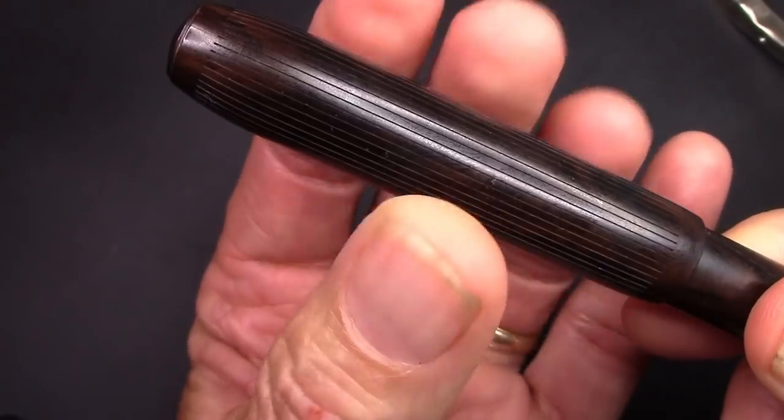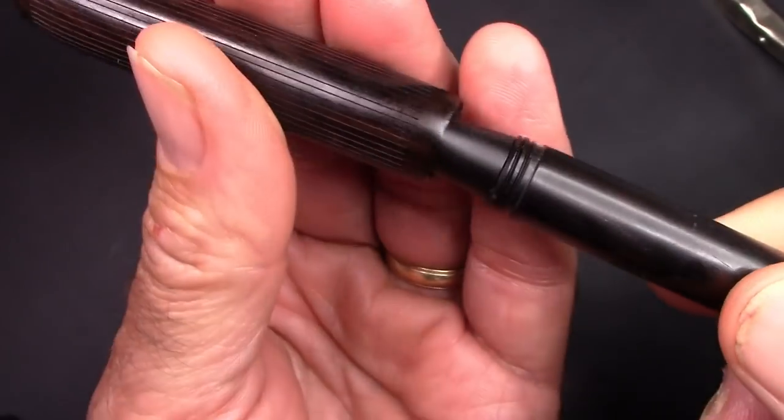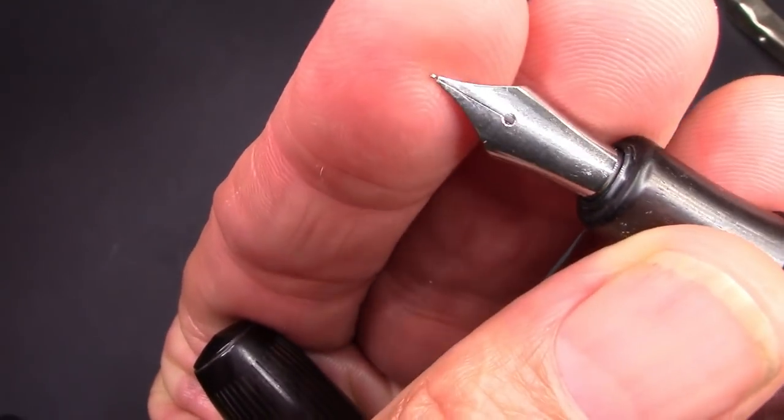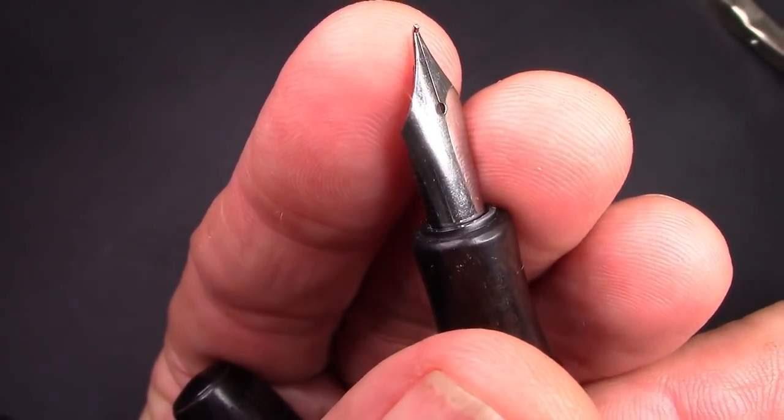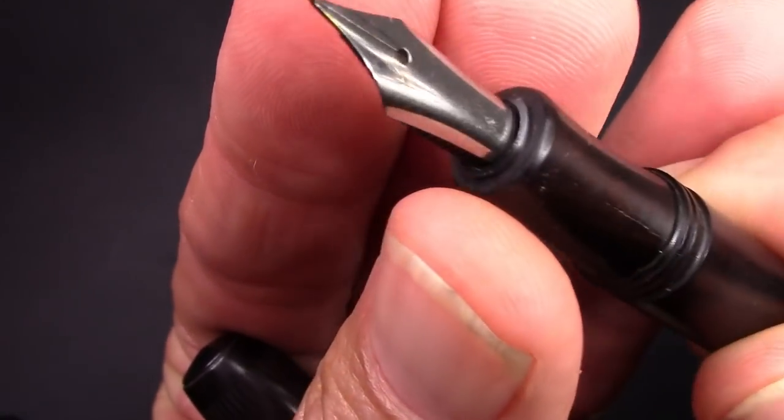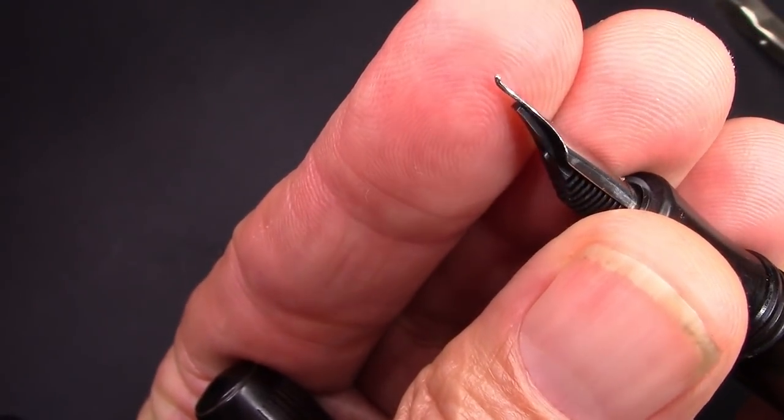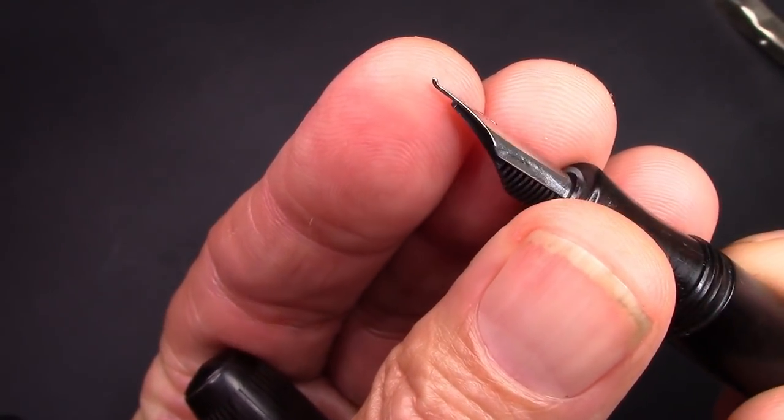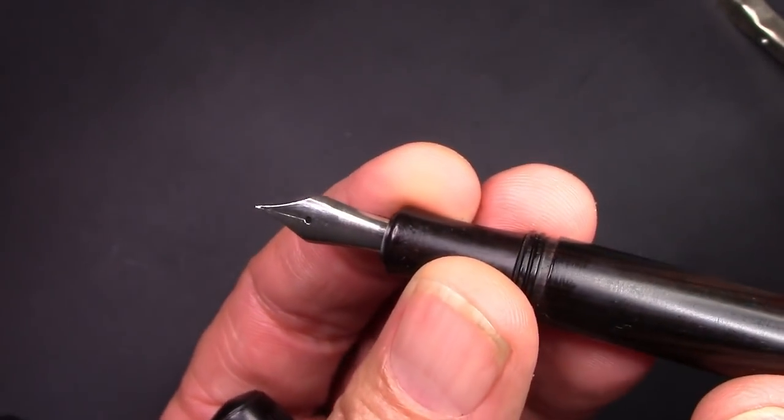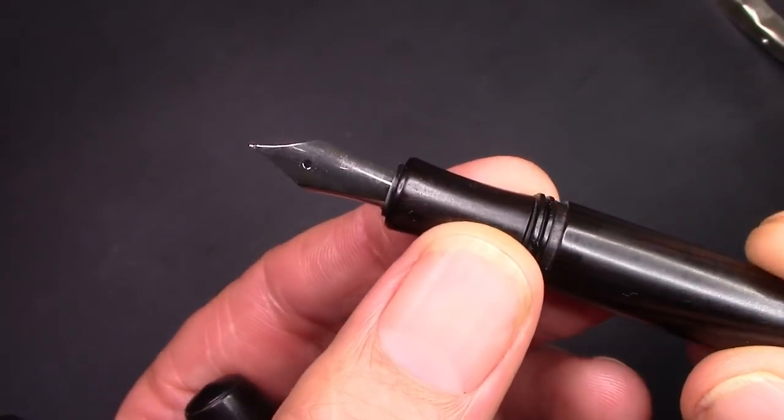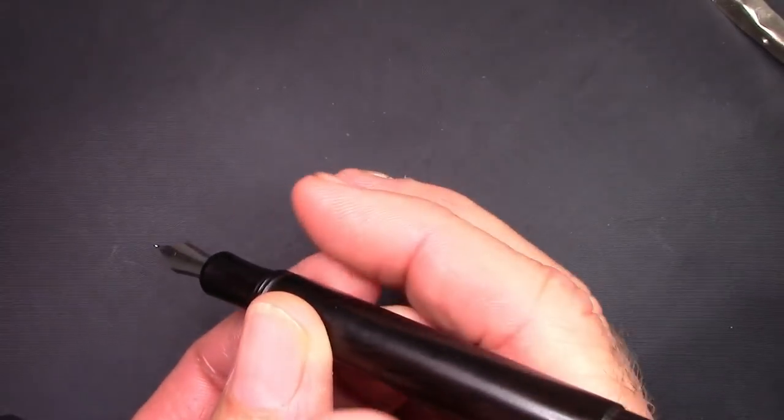The cap unscrews. Man it's a good almost three turns and we'll see a very generic number five size nib. But it's the kind that I like because it has that little upturn at the end. I wouldn't really call it a food day but it certainly works well with my writing style. Nice kind of block threads there but it still takes a while to uncap the pen.